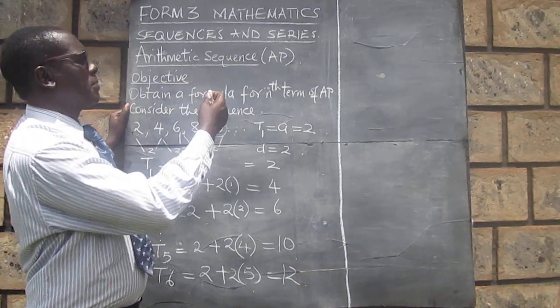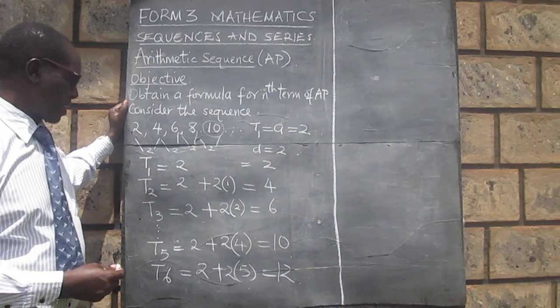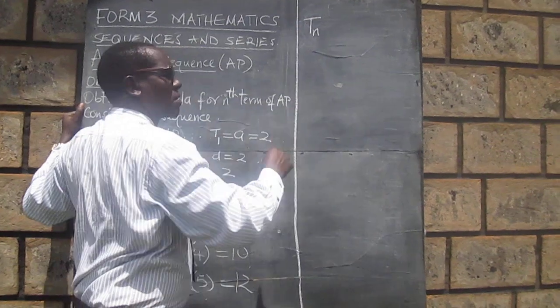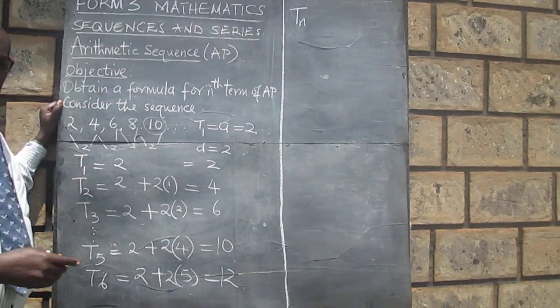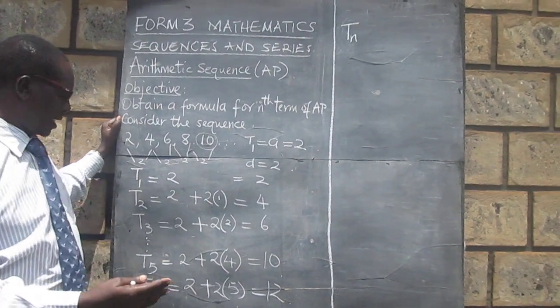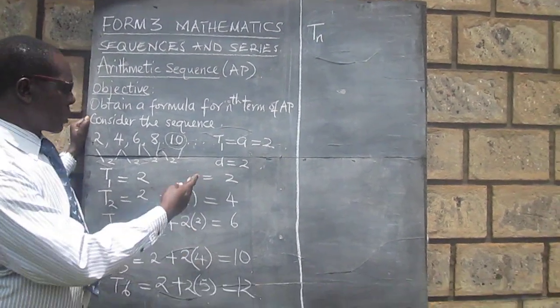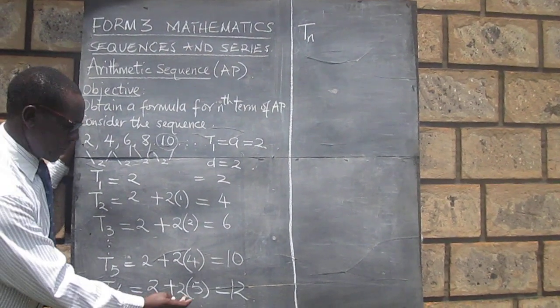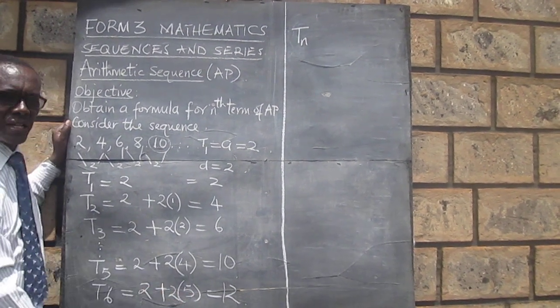And we can generalize this pattern as follows. We want the term in whatever position. It can be, if we wanted the sixth term, we got it here. It is the first term plus 6 minus 1 times the common difference.